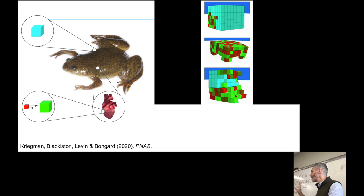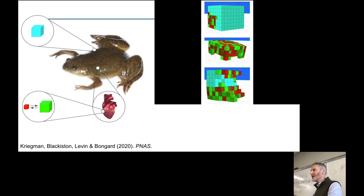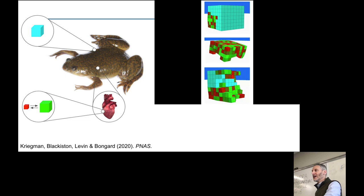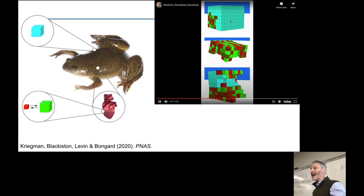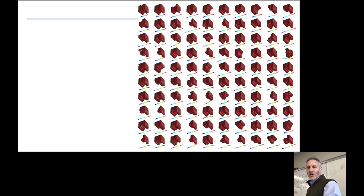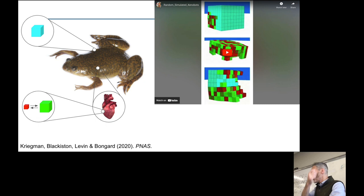Our immediate question was: could HyperNEAT find a way to evolve physical structures that produce non-random behavior despite unreliable, out-of-phase muscle parts? As always, we evolved these for locomotion — moving as quickly as possible to the right. HyperNEAT has a difficult task: create a reliable machine that reliably moves to the right out of unreliable, unsynchronized parts.